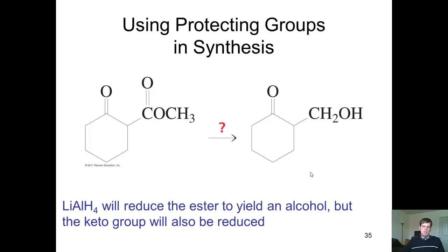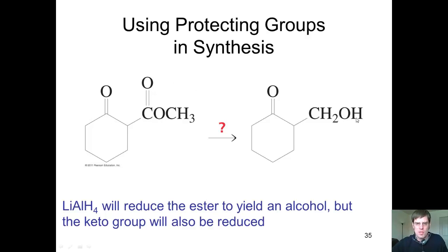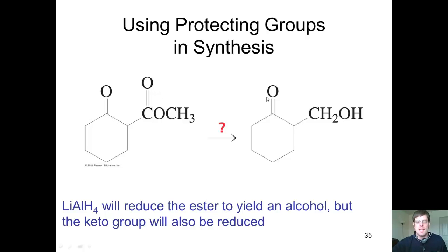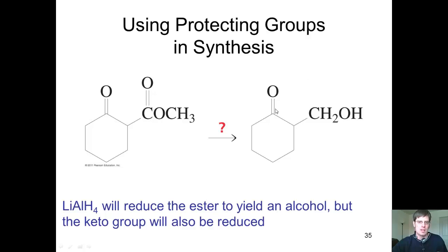We now turn back to the question I brought up earlier. If I had a product and I wanted to only reduce the ester and not touch the ketone, what could I do? Could I treat this with lithium aluminum hydride and convert the ester into a primary alcohol and leave the ketone alone? The answer is no. Lithium aluminum hydride is a very potent source of H minus, so the H minus will go into the ketone as well and reduce it to a secondary alcohol, and it will also reduce the ester to a primary alcohol.